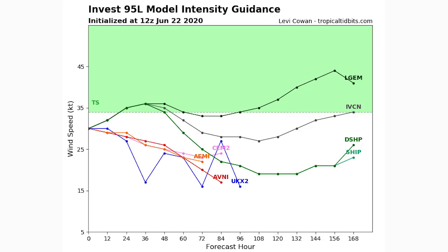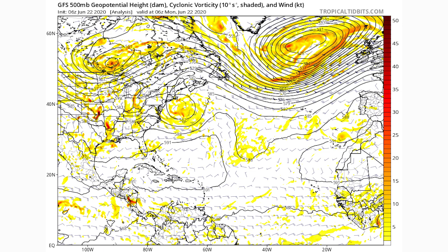Moving to our intensity guidance, most models have it heading downward from this point, but there are a few that take it into what I'd call subtropical storm status. I don't think it will be a tropical storm, but if this were the case we might hit around 35 knots, which would be enough to briefly make it a tropical storm. That would be our C-named storm, which would be interesting, but I don't think that's very likely at this point.